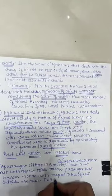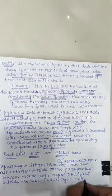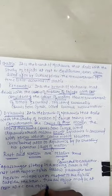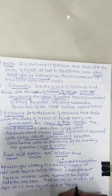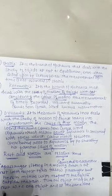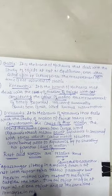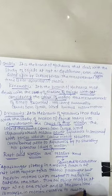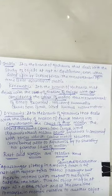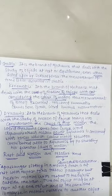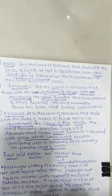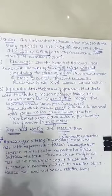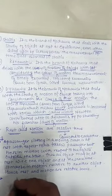Thus, an object may be at rest with respect to one object and at the same time be in motion relative to another object. Hence, rest and motion are relative terms.